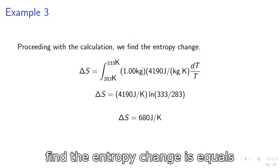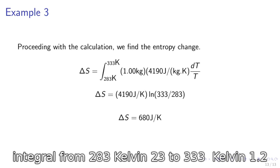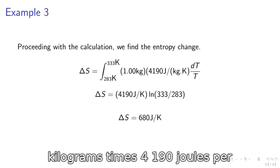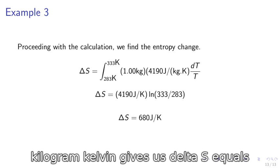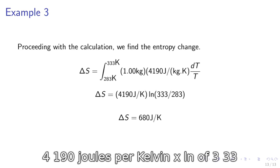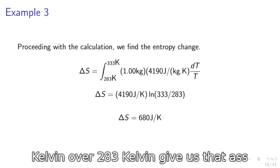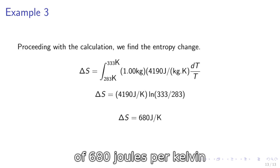Proceeding with the calculation we find the entropy change. Delta S equals the integral from 283 Kelvin to 333 Kelvin, 1.00 kg times 4190 joules per kilogram Kelvin, which gives us delta S equals 4190 joules per Kelvin times ln of 333 Kelvin over 283 Kelvin, giving us delta S of 680 joules per Kelvin.